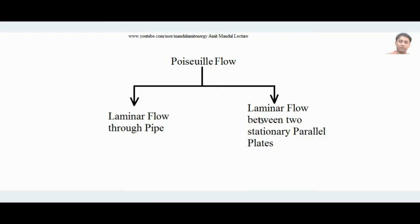Remember that in the case where laminar flow occurs between parallel plates, those plates are stationary and not moving. Regarding the spelling of 'Poiseuille': it is composed of two parts — 'poise' (P-O-I-S-E), which is a unit of viscosity, and 'uille' (U-I-L-L-E). Combining these gives you the spelling 'Poiseuille'.